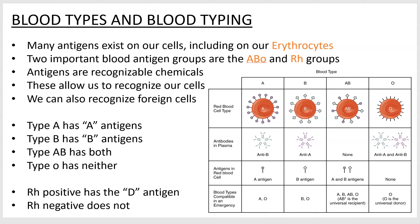Your blood cells have over 30 different identifiable surface chemicals on them that can act as antigens — recognizable things that we can either allow to exist in our body if they're familiar to us, or react to adversely with our immune system if they are not familiar to us. Two important antigen groups on our blood cells are the ABO blood types and the RH groups.